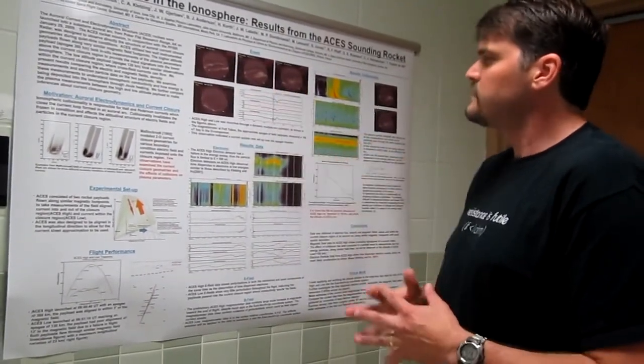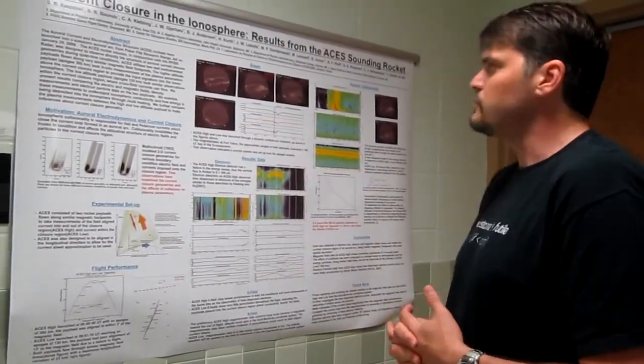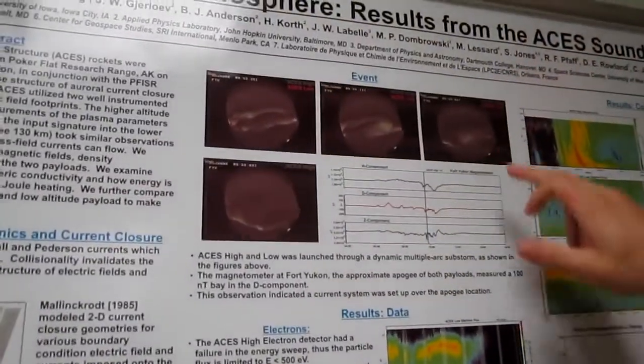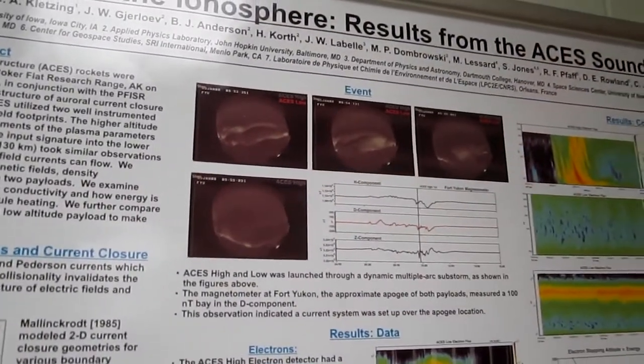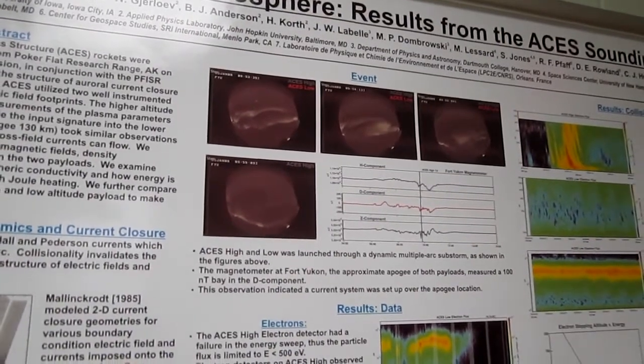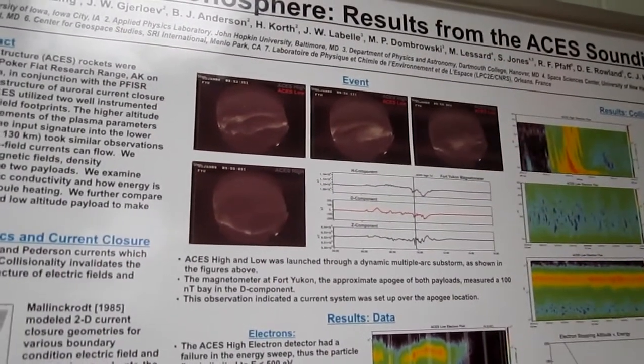That's what's producing the light that is seen with the aurora. Actually, here's images of the aurora that we flew through at two different altitudes. The dots up here indicate where the rockets were at various points in time relative to this ground-based image of the aurora.